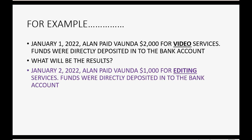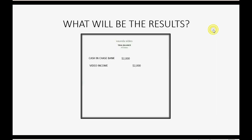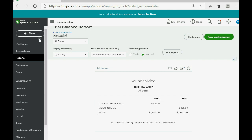Now let's do the next one. Let's imagine on January 2nd of 2022 Alan paid Vonda a thousand dollars for editing services, and again the funds were directly deposited into the bank account. If this is what the trial balance looks like before that transaction, and we add an additional thousand dollars, cash in Chase Bank becomes three thousand dollars, and editing income will show up on the trial balance for the very first time as a thousand dollars.